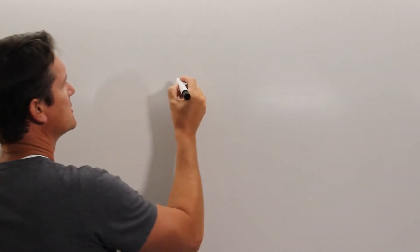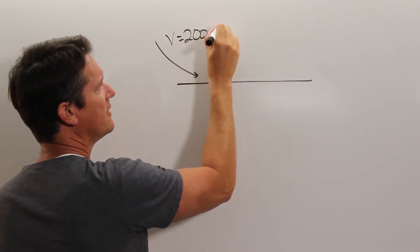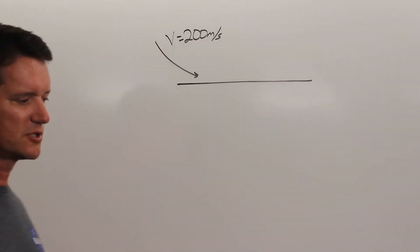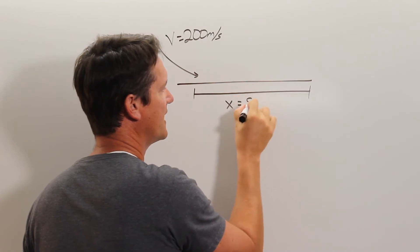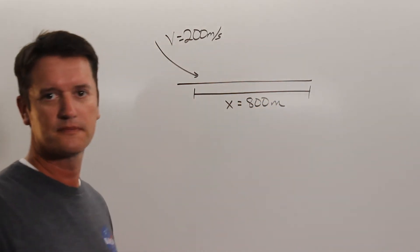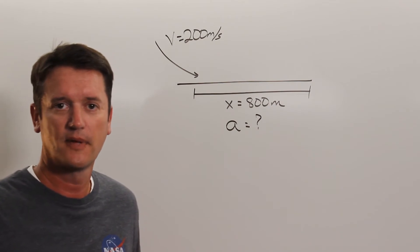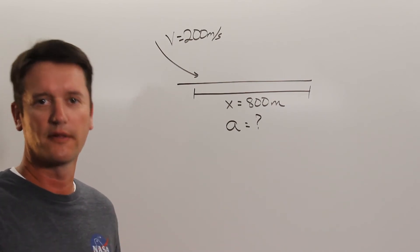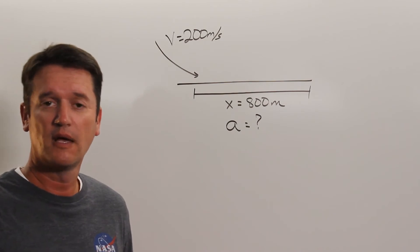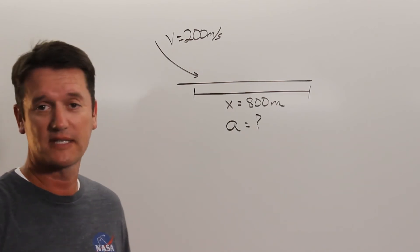New problem — this time our plane is landing. It has a velocity of 200 meters per second as it hits the runway, and it comes to a stop over a distance of 800 meters. My question is, what is the deceleration — the acceleration — of this plane? There are lots of different ways we can solve this. We could solve for one variable to get another, use graphing, or derive an equation that doesn't have time in it, since we don't have the time.